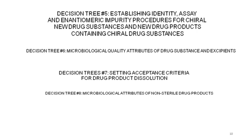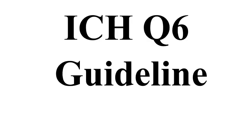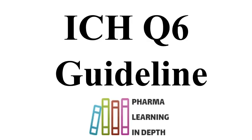Decision tree 6 is for microbiological quality attributes of drug substances and excipients. Decision tree 7 is for setting acceptance criteria for drug product dissolution — this is very, very important to understand how to set acceptance criteria for dissolution. Many videos are available on this Pharma Learning in Depth channel and you can go through the playlist to have a good idea about dissolution topics. Decision tree 8 is for microbiological attributes of non-sterile drug products.